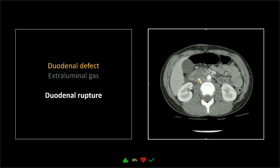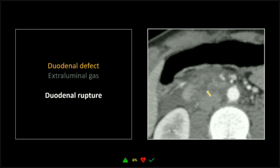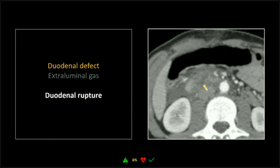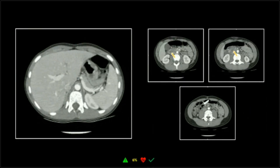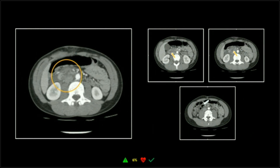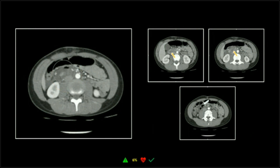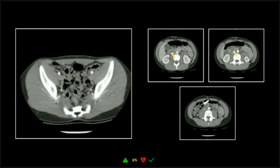So this is a duodenal rupture at the posterior wall right near the meeting of the second and third portions of the duodenum. You can see the duodenal defect — there is just no posterior wall to it whatsoever. The gas collections with these can be kind of subtle, but they are definitely retroperitoneal. There is the duodenal defect and then the gas collection right adjacent to it, really contained there in the retroperitoneum.